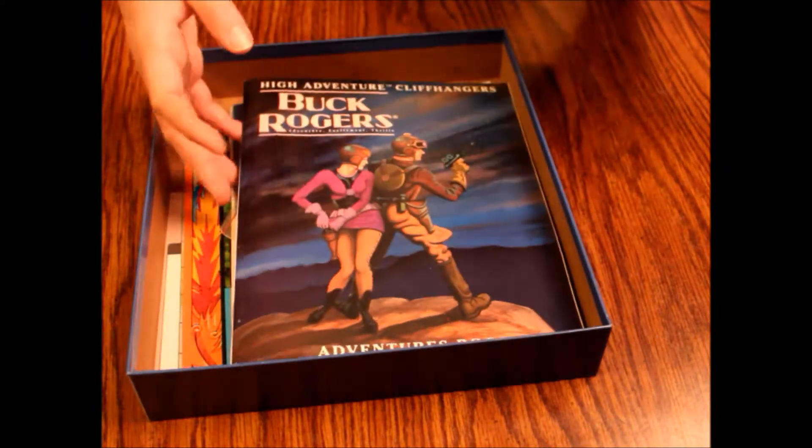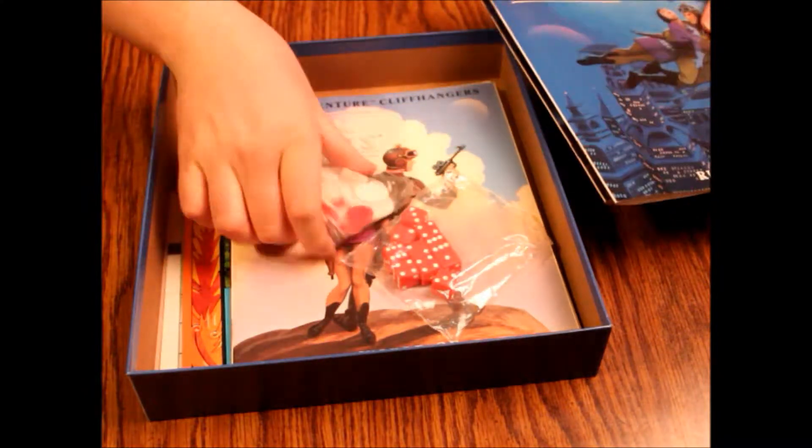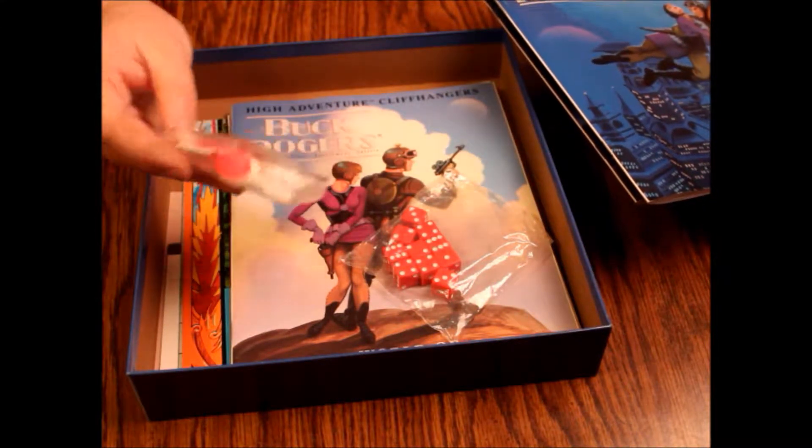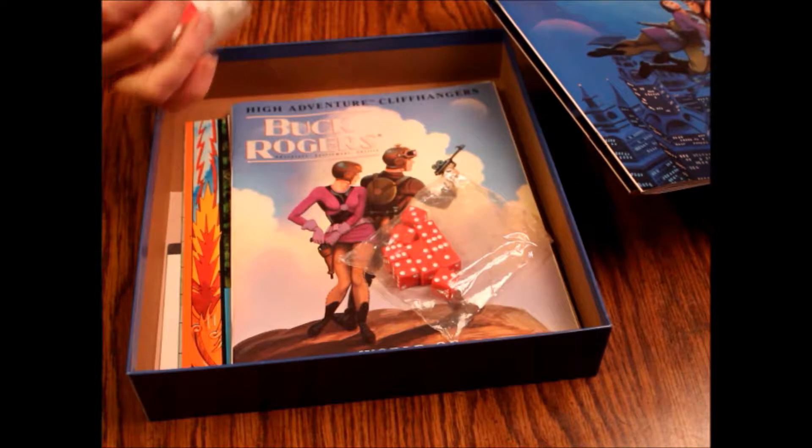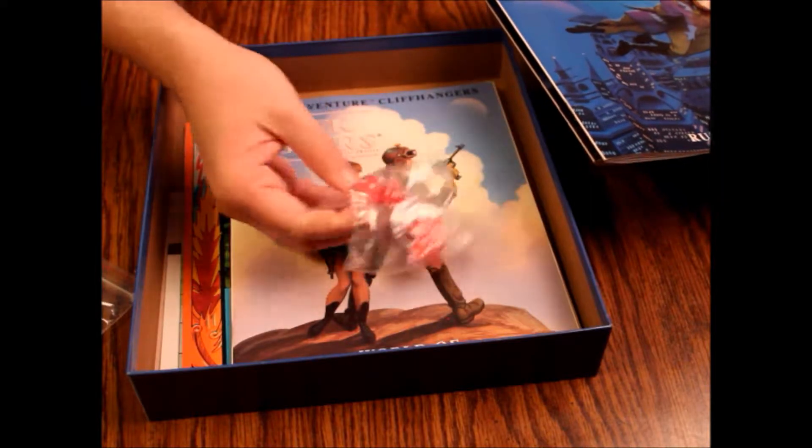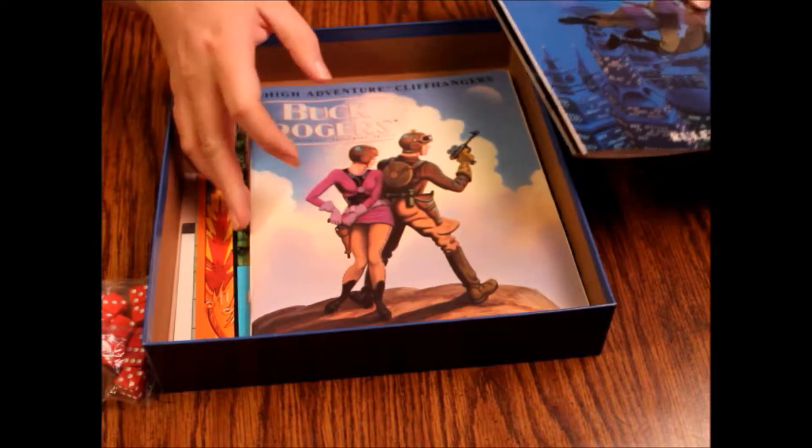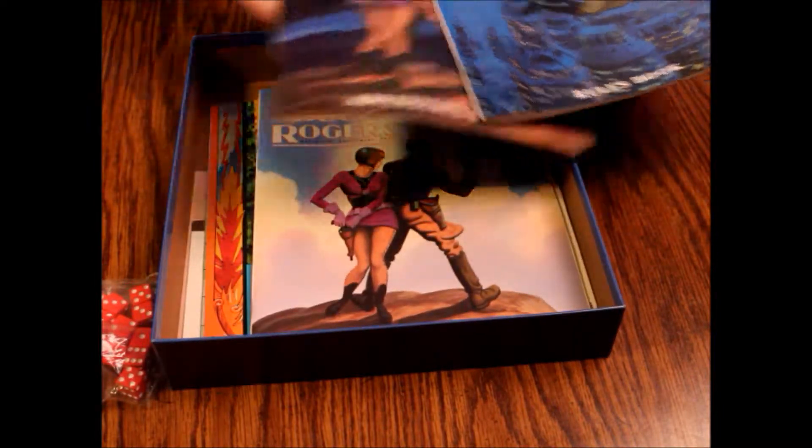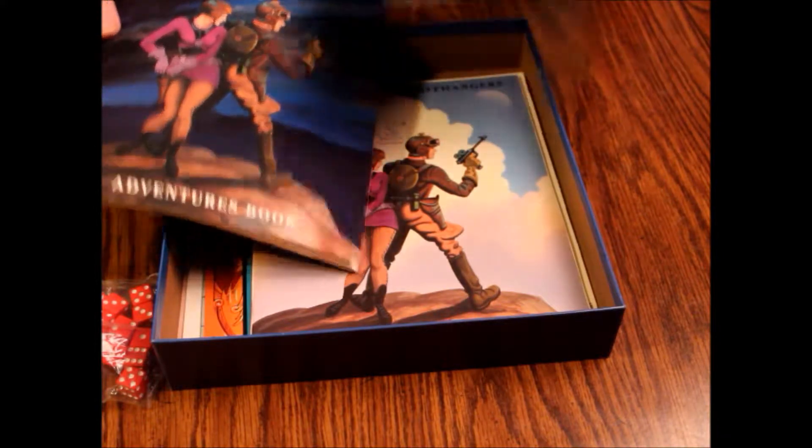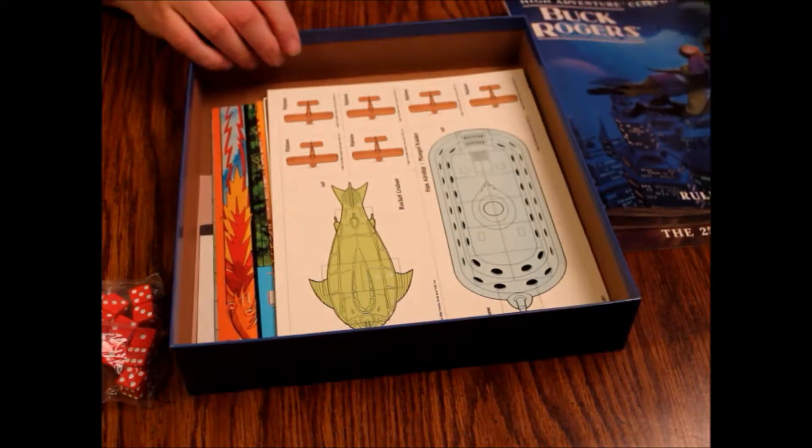Alright, so here we have our rule book, an adventure book that uses the old style of art. We've got a whole bunch of tokens here, mostly white ones with about five or six red ones—just cheap little poker chips. There's about ten dice. Then we've got World of the 25th Century, which has the same cover just different background.